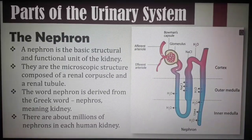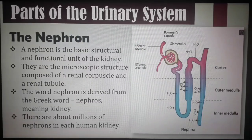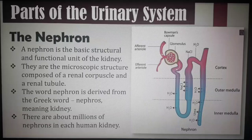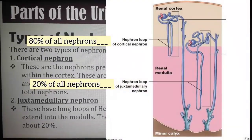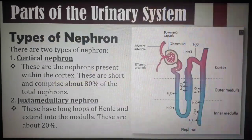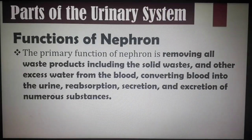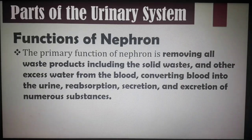The nephron is the basic structural and functional unit of the kidney. Nephrons are microscopic structures composed of a renal corpuscle and a renal tubule. The word nephron is derived from the Greek word nephros, meaning kidney. There are about millions of nephrons in each human kidney. Types of nephrons include cortical nephrons and juxtamedullary nephrons. The primary functions of a nephron are removing waste products and excess water from the blood, converting blood into urine, reabsorption, secretion, and excretion of numerous substances.